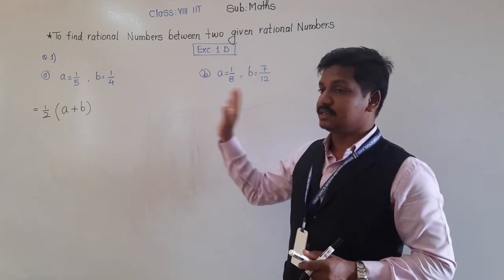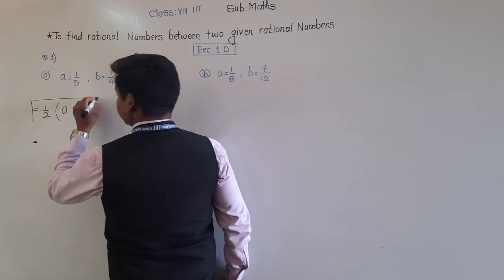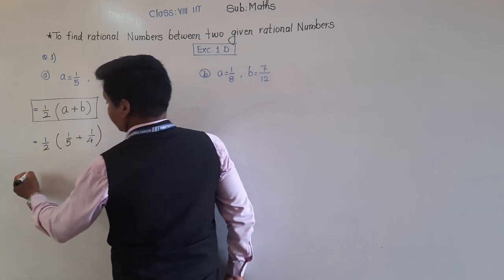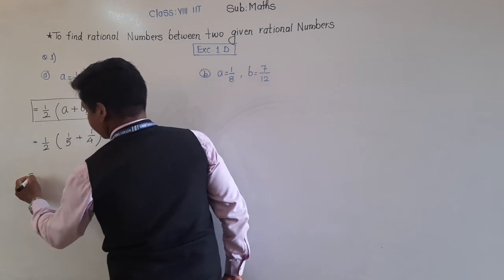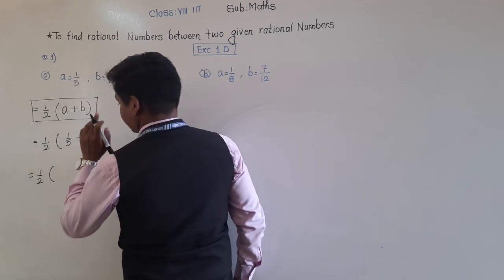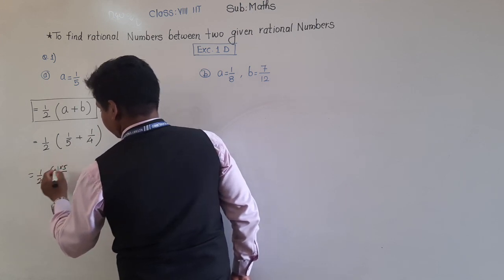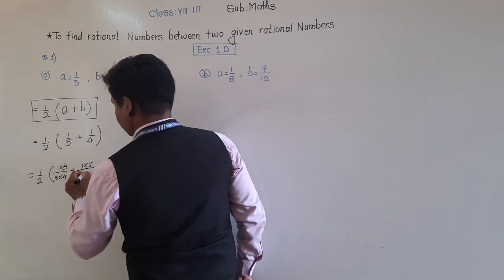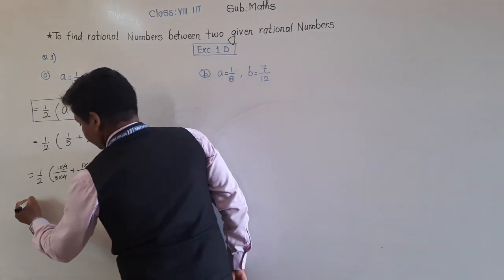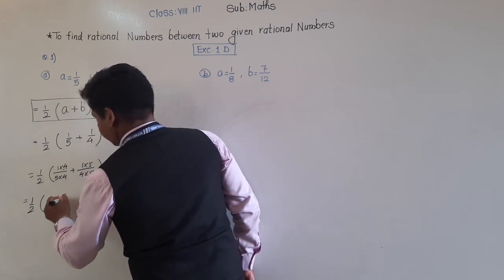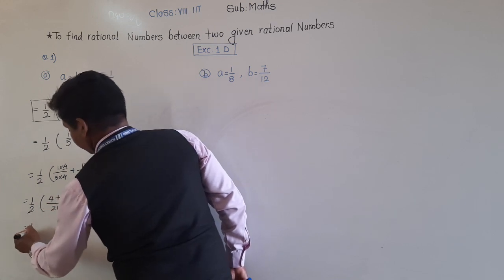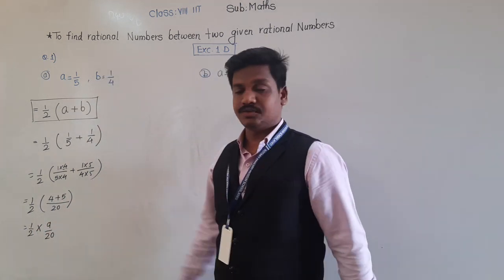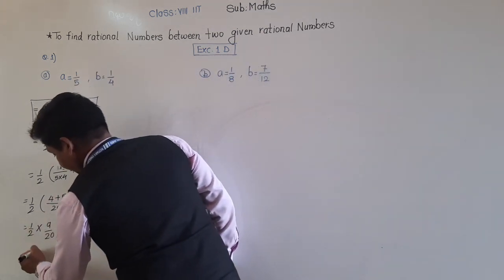So: (1/2) × (1/5 + 1/4). Let's add the rational numbers in the bracket. The LCM of 5 and 4 is 20, giving us (4/20 + 5/20) = 9/20. So we have (1/2) × (9/20). Multiplying: 9/(2×20) = 9/40.